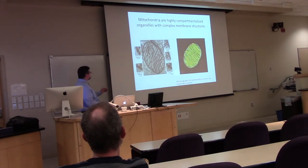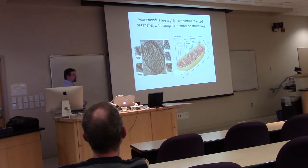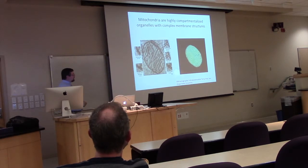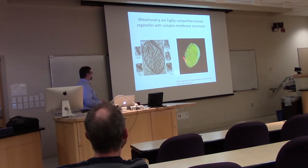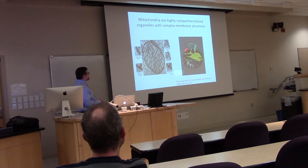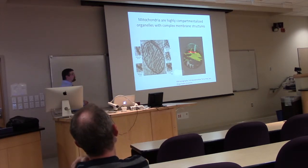The baffle model popular in textbooks shows invaginations of the inner membrane, but when we do three-dimensional tomography we see that this model isn't exactly correct. We see tightly packed inner membranes, but the cristae actually form large cisternae — this is where all ATP production happens. They contact the boundary membranes only through small cristae junctions, which form a diffusion barrier from the cristae to the intermembrane space between the boundary region and the outer membrane.